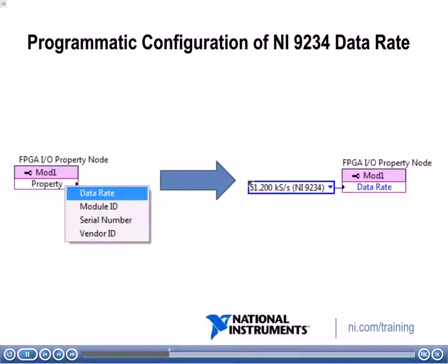Another way to configure the data rate is programmatically. You can put down an FPGA IO property node, which allows you to access the data rate property. From there, you can create a constant or an input for it and programmatically select what the data rate is going to be — in this case, 51.2 kS per second. Let's go into LabVIEW and see how this looks.